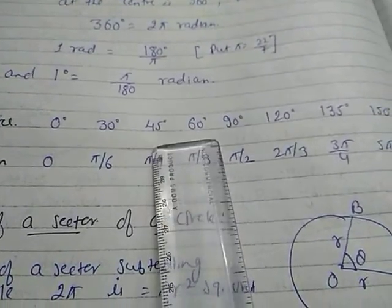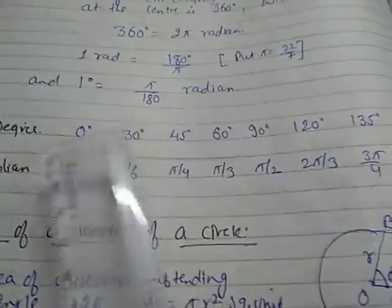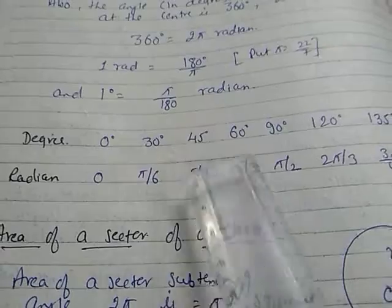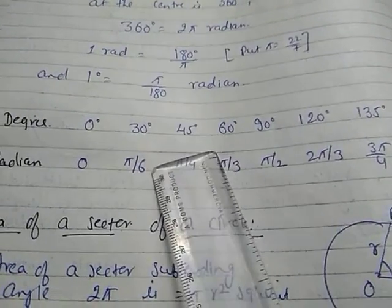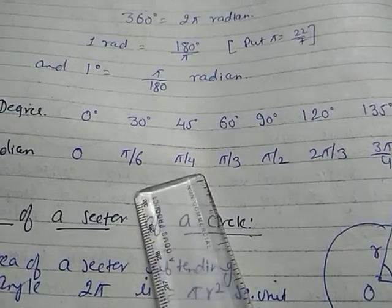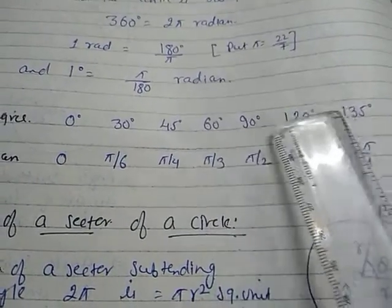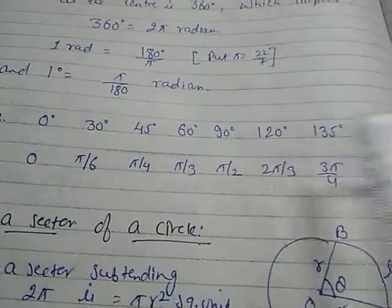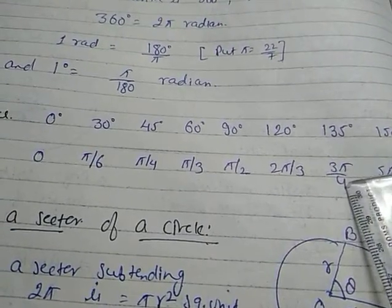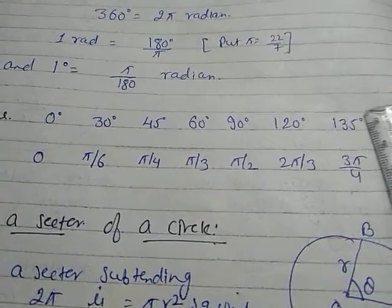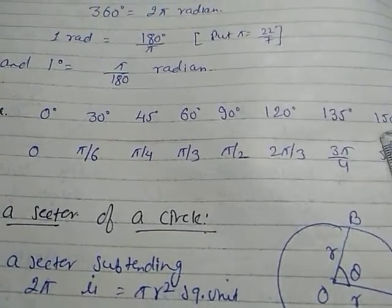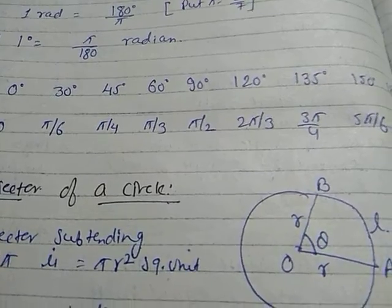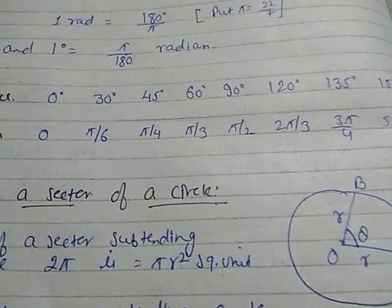Multiplying by π/180: 30° gives π/6 radians, 45° gives π/4 radians, 60° gives π/3 radians, 90° gives π/2 radians, 120° gives 2π/3 radians, 135° gives 3π/4 radians — you get this by multiplying 135° × π/180. You can calculate for any degree measure to radian measure this way.